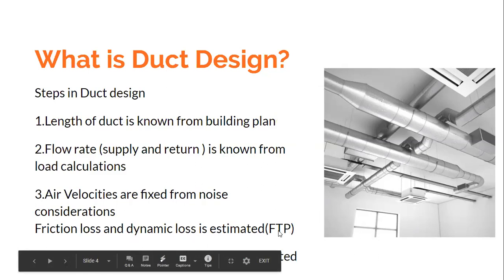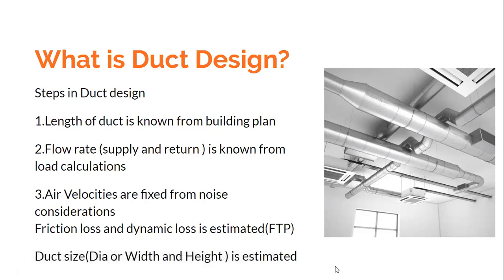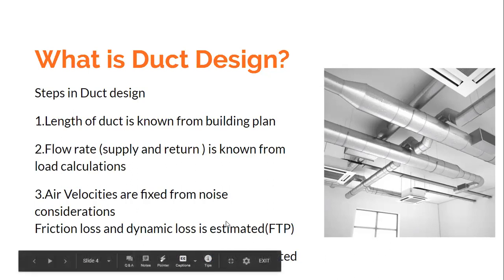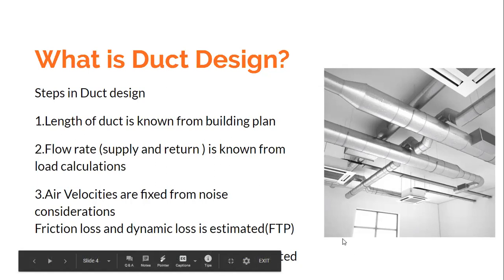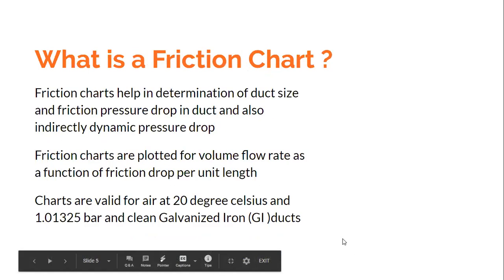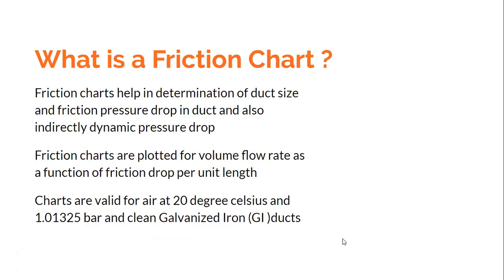Once you get the friction loss and dynamic loss, you can estimate the Fan Total Pressure (FTP) and hence select the fan. These are the important steps of duct design. The outcome of duct design is generally that we find the diameter or the equivalent diameter of the duct.